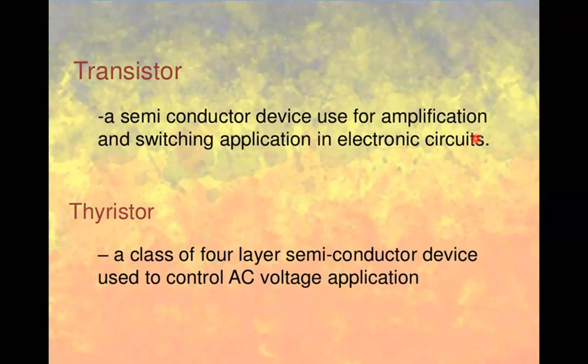A transistor is formed when two PN junction diodes are suitably combined. It is a semiconductor device used for amplification and switching applications in electronic circuits. The main applications of a transistor are as an amplifier or as a switch circuit.